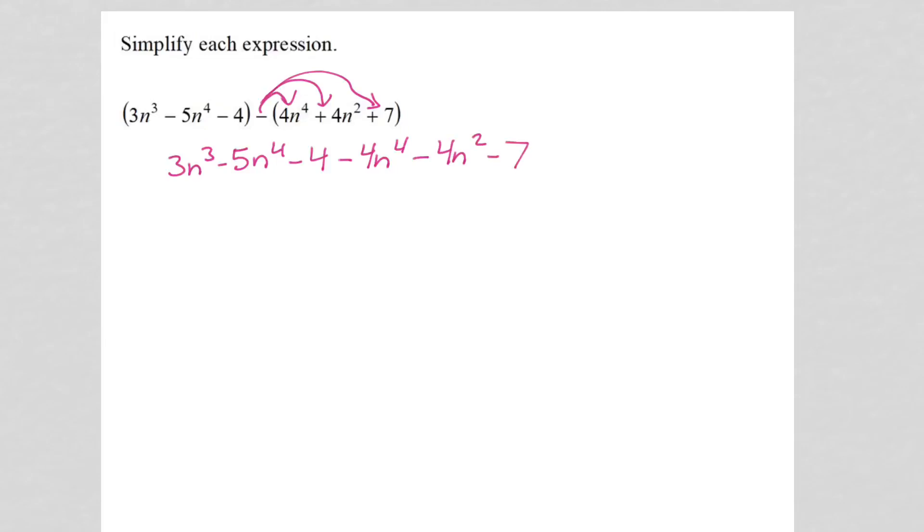And now all I need to do is combine like terms starting with my highest exponent. So I've got negative 5n to the 4th minus 4n to the 4th. So that gives me negative 9n to the 4th.